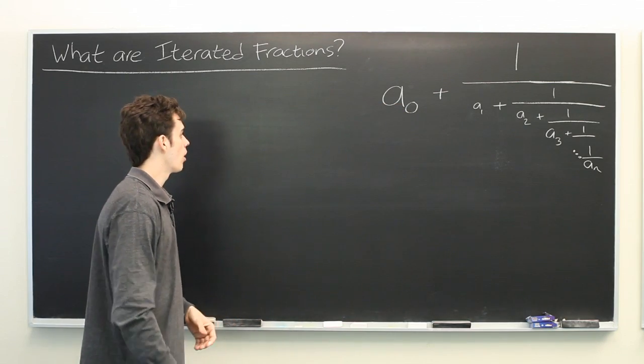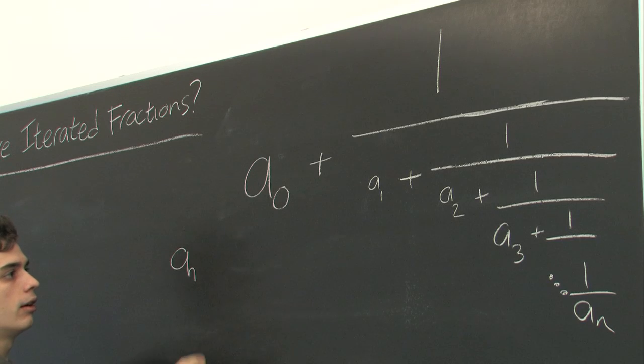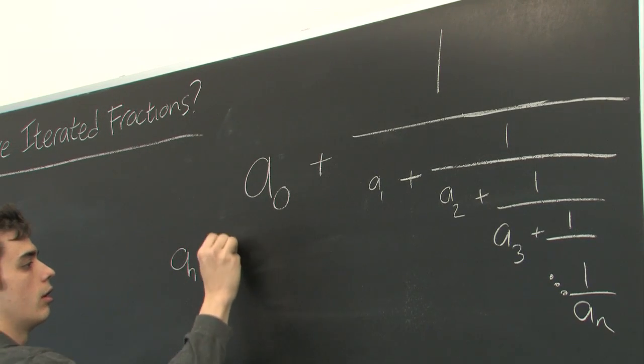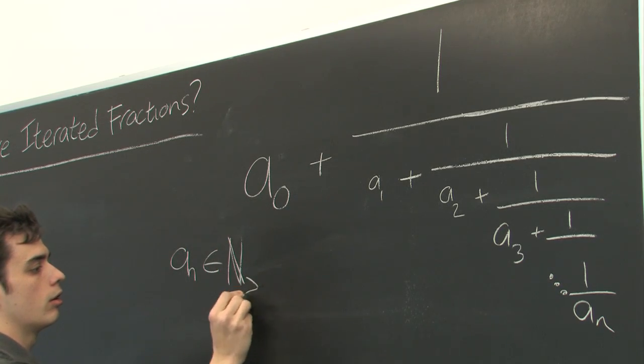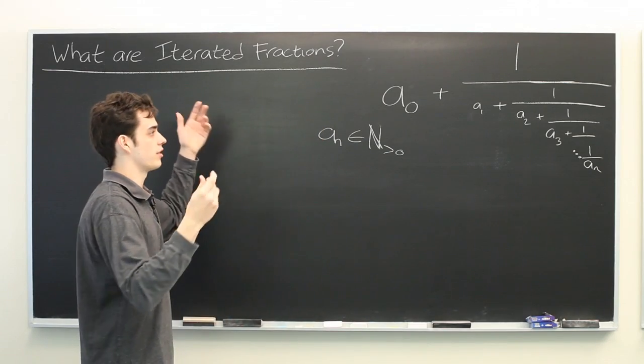where all of the an's are simply natural numbers greater than 0. So, 1, 5, 17, and so on.